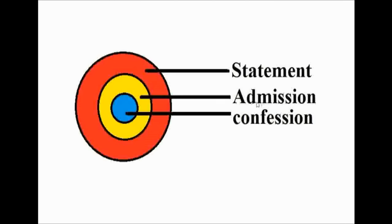When we talk about admission and confession, we must look at this chart. You can see the red portion — that is the statement. The yellow portion is admission, and the blue portion is confession. The statement is very wide; the smaller part of the statement is admission, and the smaller part of admission is confession. When any accused person admits or accepts any statement, it is admission. When any person confesses the offense that he has committed, that is confession. So every confession is an admission, but not every admission is a confession.